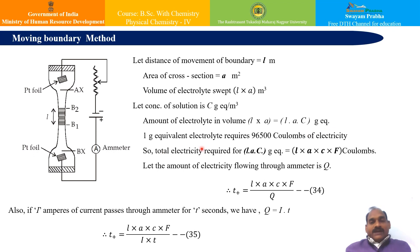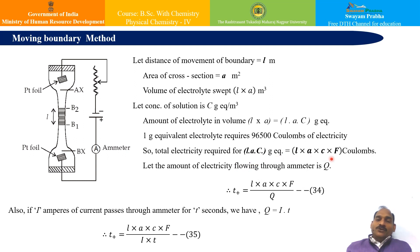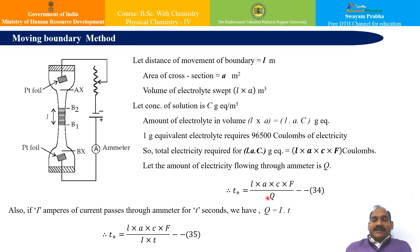One gram equivalent of electrolyte requires 96,500 coulombs of electricity. So the total electricity required for L × A × C gram equivalents will be L × A × C × F coulombs, where F is the Faraday constant. If the amount of electricity flowing through the ammeter is Q, then the transport number is given by L × A × C × F divided by Q — this is equation 34.